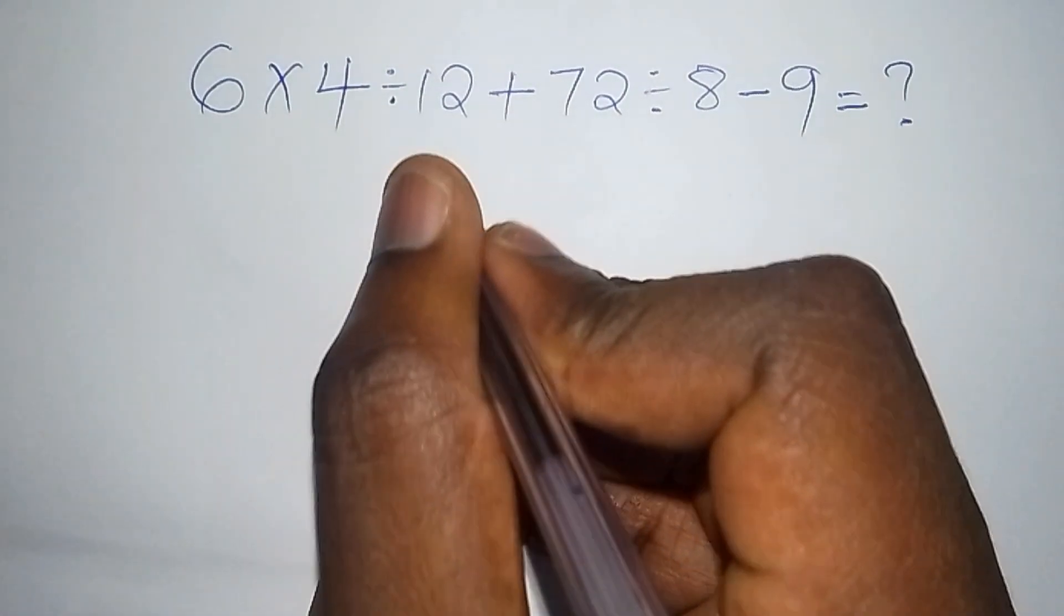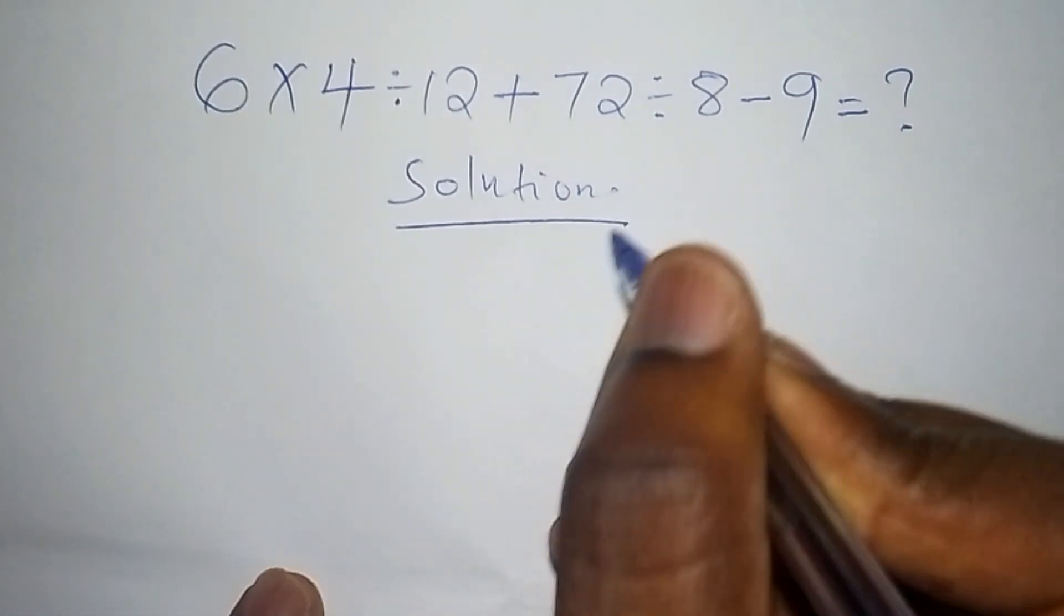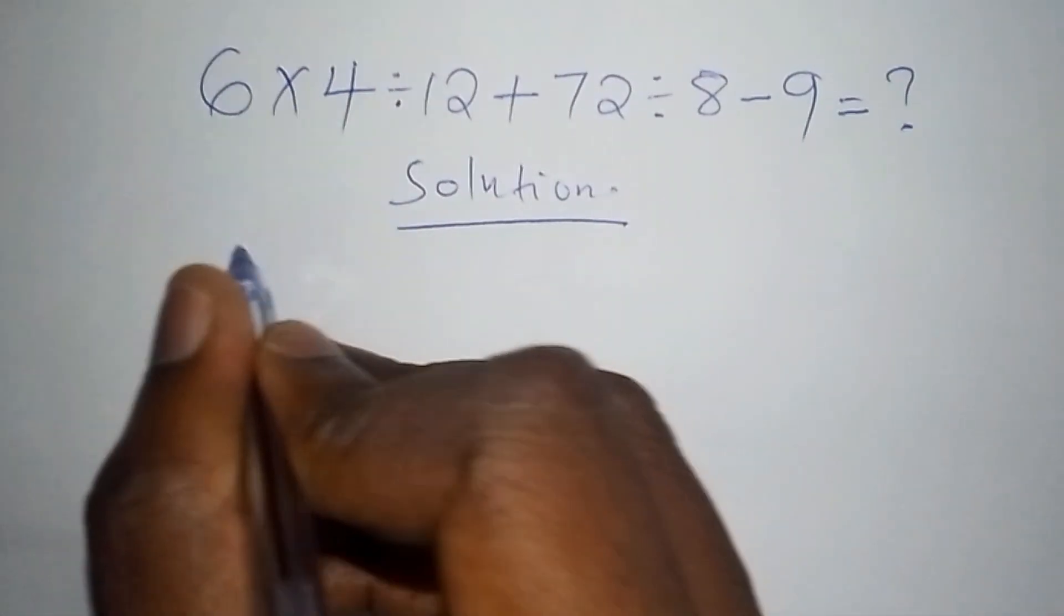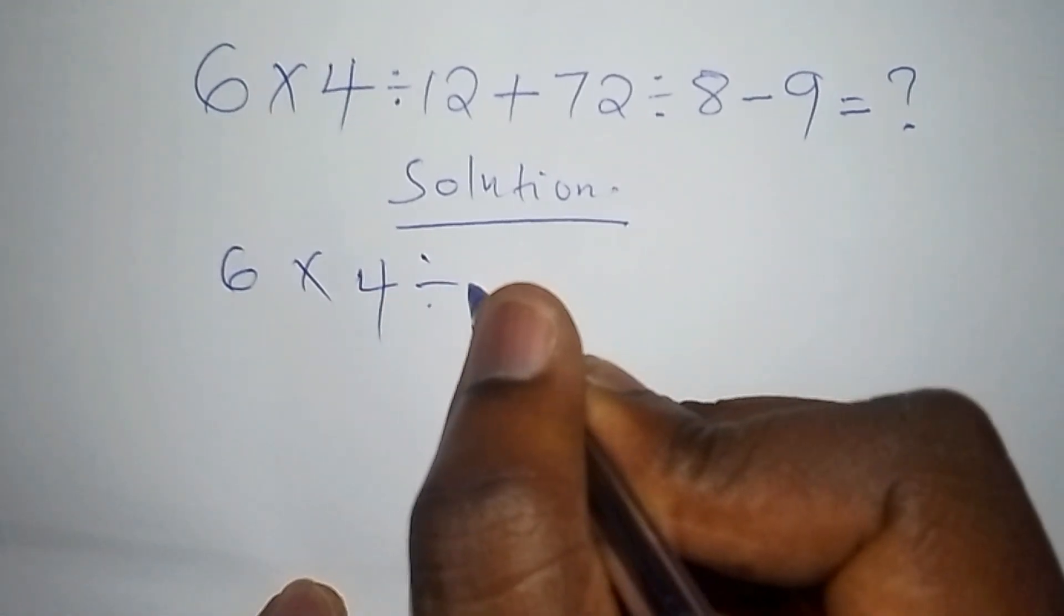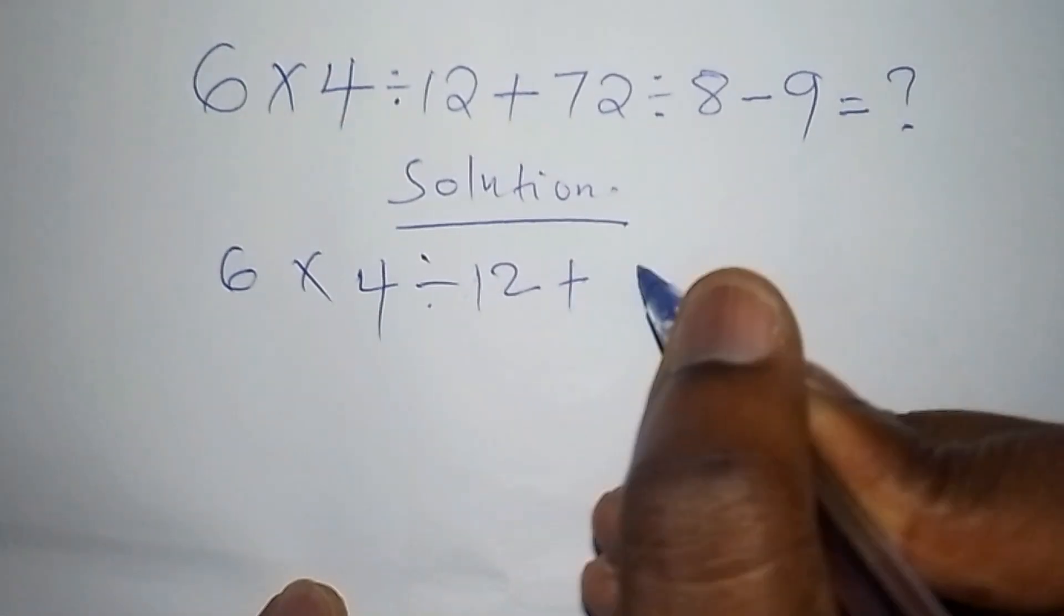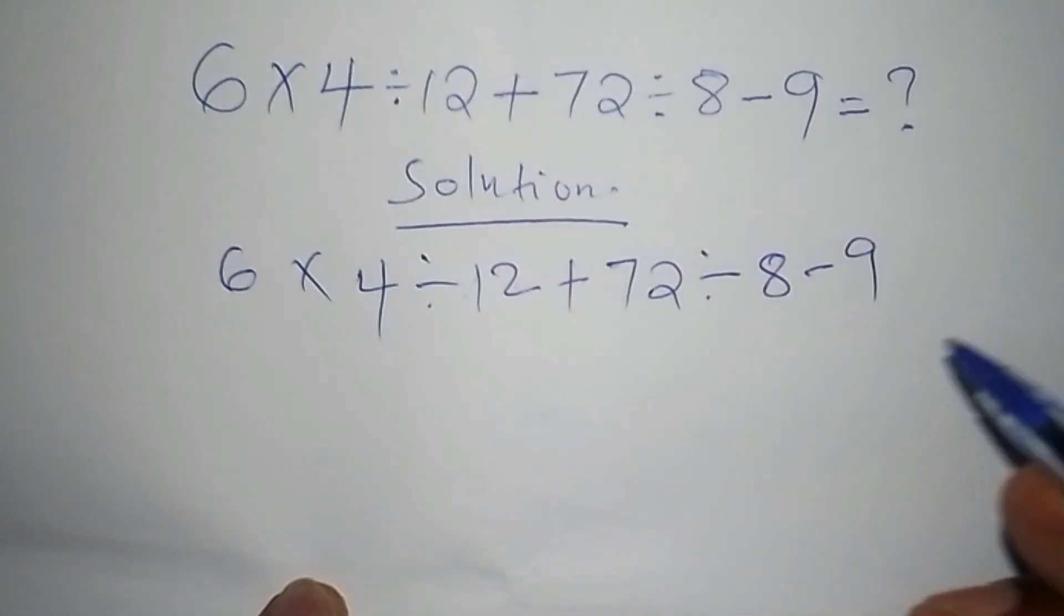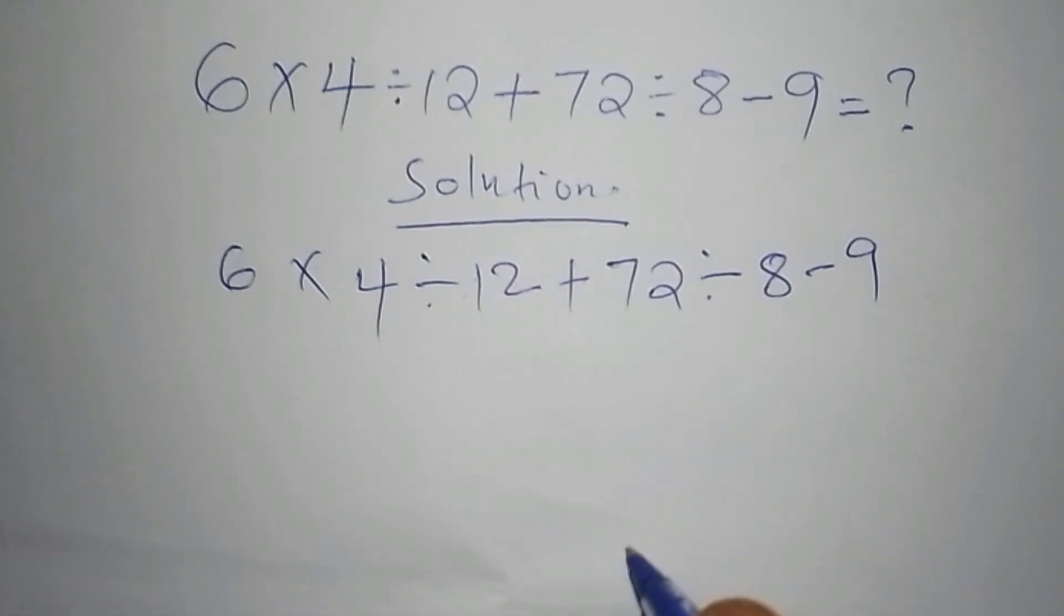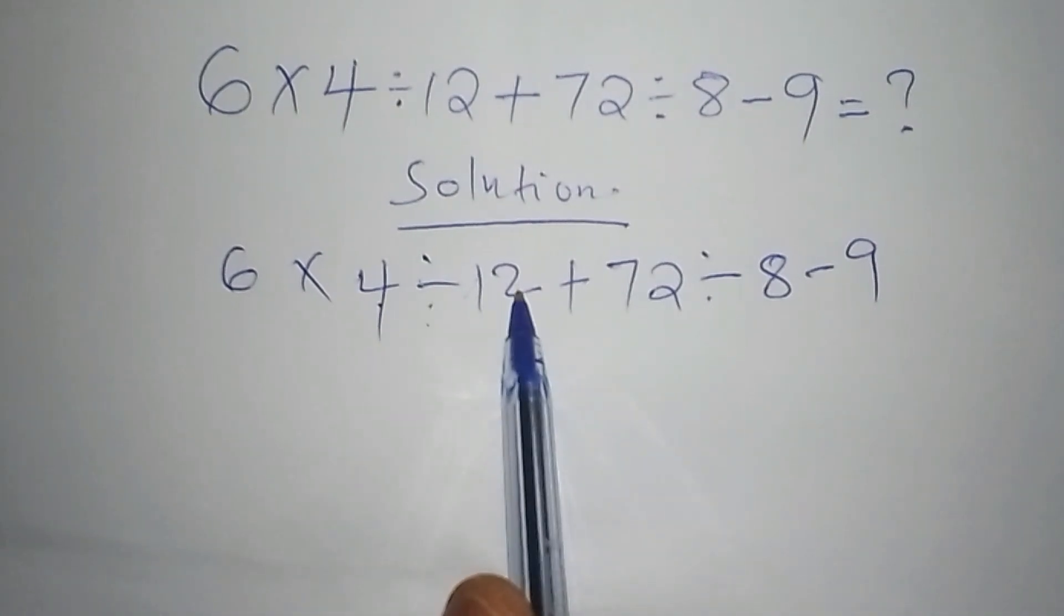Let's start now. Here we have what is called the solution. So let's begin with the solution to this problem. Under this solution we have 6 multiplied by 4 divided by 12 add to 72 divided by 8 minus 9. So the first thing that we need to do is that we are not just going to take 4 divided by 12 directly, no.